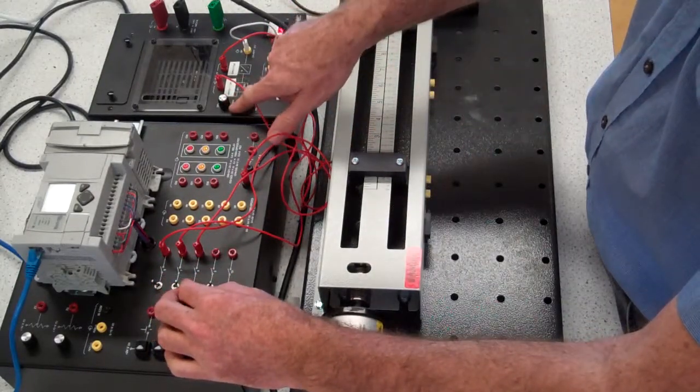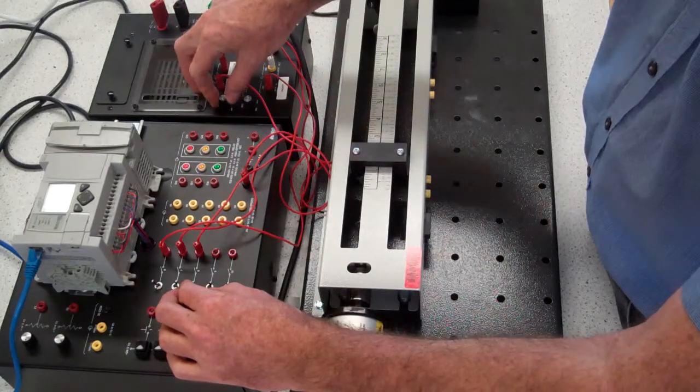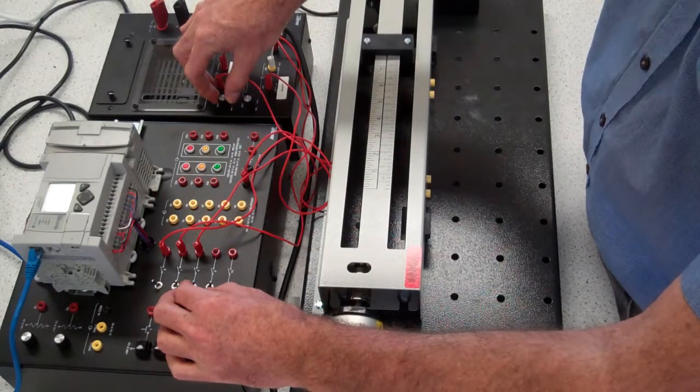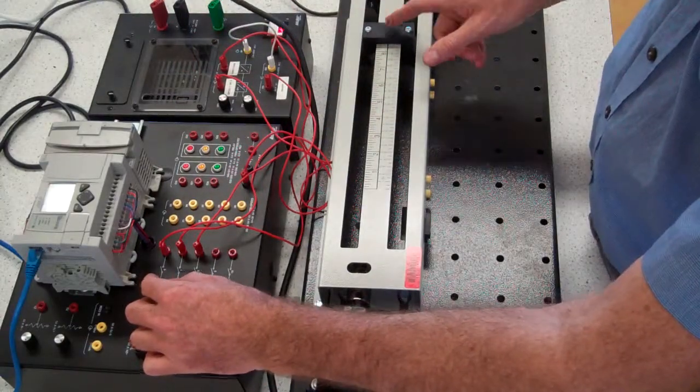And I can just show you how the speed changes here. This is the variable adjustment. So I can bring it up high or bring it right down low and turn it off.